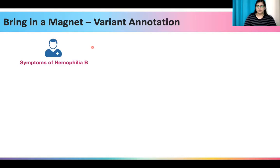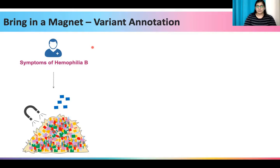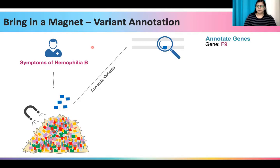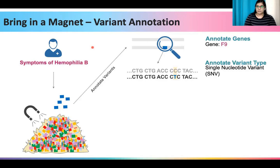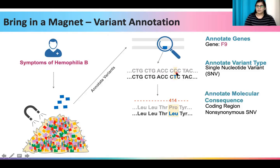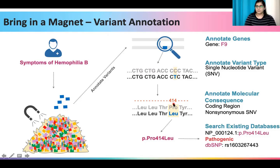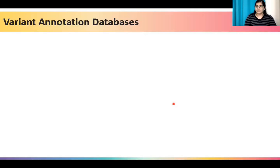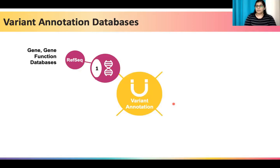For example, if we have a patient showing symptoms of Haemophilia B, we don't need to view his whole heap of variants. We can annotate them and look at variants that only lie in the gene F9, a gene known to cause Haemophilia B. On closer examination of this gene, we find a single nucleotide variant — a C to T change. On further annotation, we find that it lies in a coding region and is a non-synonymous change causing a proline to leucine mutation at amino acid position 414. Searching existing databases for this protein change, we find that this variant has already been reported as pathogenic in a previous patient, which is a high amount of evidence to prioritize this as a probable disease-causing variant for our patient.